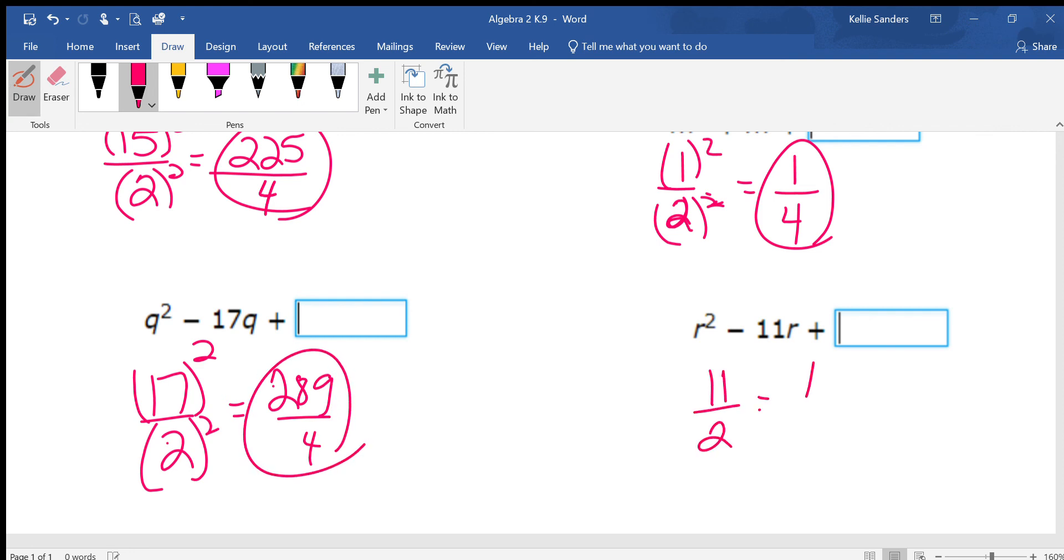11 over 2 doesn't reduce. Square both. And that's 121 over 4.